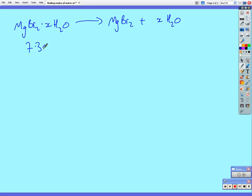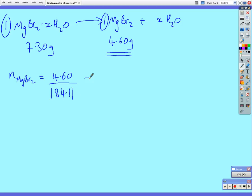And again, the information in the question, we're given 7.30 grams of the hydrated salt, and it gives us 4.60 grams of the anhydrous salt. Well, the trick here is to remember that the equation is the stoichiometric equation. It gives the ratio of the reactants and products. One mole of magnesium bromide·xH2O gives us one mole of magnesium bromide. So, if we work out the number of moles of the anhydrous magnesium bromide.